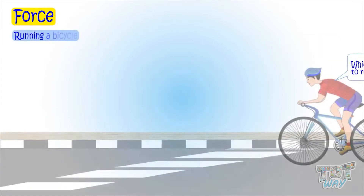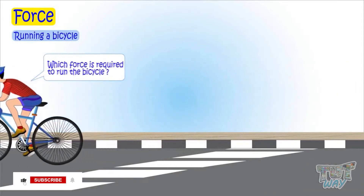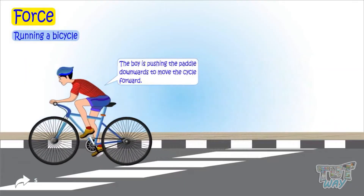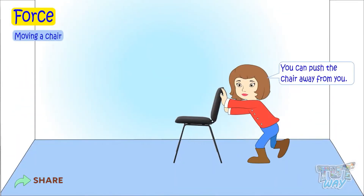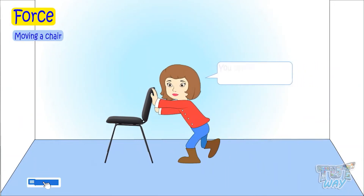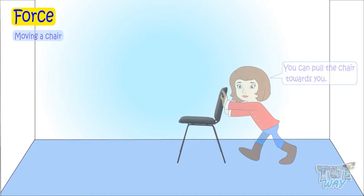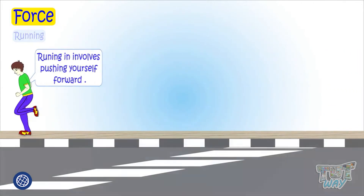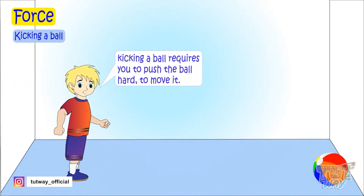Running a bicycle — what force is required to run a bicycle? You require to push the paddles to run a bicycle. Moving a chair — you need to push the chair away from you, or you pull it towards you. Running also involves pushing yourself forward. Kicking a ball requires you to push the ball hard to move it.